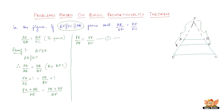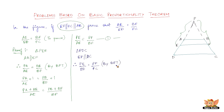Now let's consider another triangle — triangle PDC. In triangle PDC, we also have the data that EF is parallel to DC. As a result, by the basic proportionality theorem, we can establish that PE by ED equals PF by FC. Let's call this equation 2.